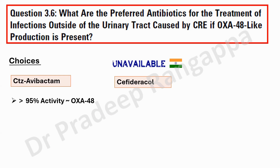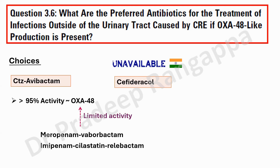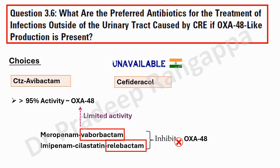Regarding the other combination drugs we are awaiting — meropenem-vaborbactam and imipenem-cilastatin-relebactam — they do not have any meaningful activity against OXA-48, because vaborbactam and relebactam do not inhibit OXA-48. Please bear in mind: if you combine meropenem with these beta-lactamase inhibitors, they have no activity against OXA-48. Only ceftazidime-avibactam is effective.